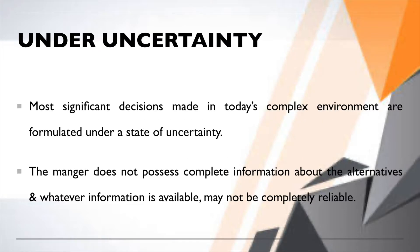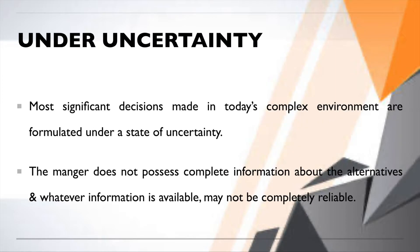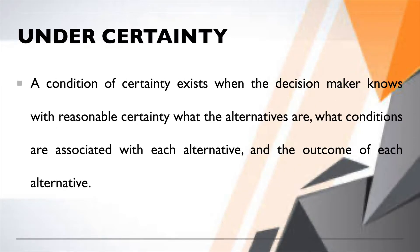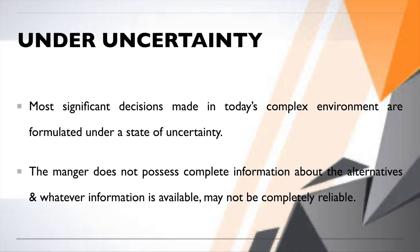The third category is under uncertainty. Under certainty you know things — the market, behavior, fluctuations; under risk information is incomplete or imperfect; under uncertainty it is completely unknown. Most significant decisions made in today's complex environment are formulated under the state of uncertainty.